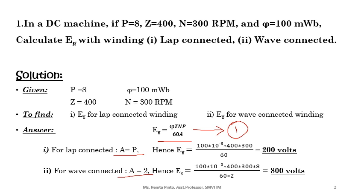Next, let us go to the wave connected case. Here A will be equal to 2. Substituting that and using the same data as before, you will get 800 volts. This is a simple problem where all the data is given and you directly substitute.